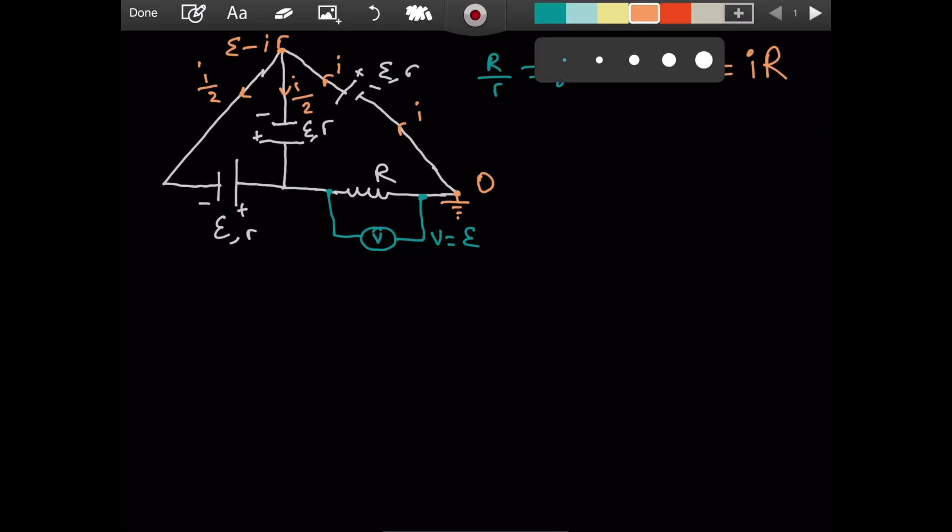All right, then. What about this point? What will its electric potential be? Again, we are traveling from the negative terminal to the positive terminal. So there will be an increase in the electric potential. This is the potential right now. So if we add epsilon to it, we have two epsilon. And then there will be a decrease. So minus two iR, right?